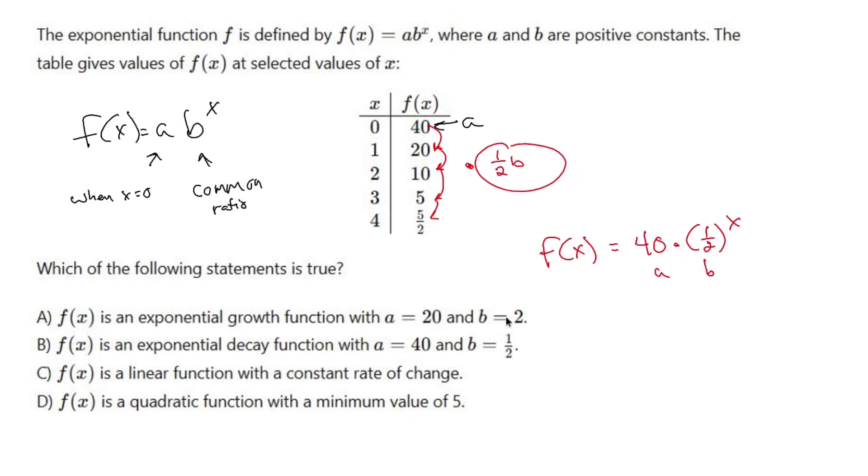It's exponential decay, and by the way, decay is whenever your b is a number between zero and one - our numbers go down. Growth is if our b is bigger than one. In this case, since b is a half, between zero and one, it's exponential decay. So a lot of stuff going on there, but we answered b and b is our answer.